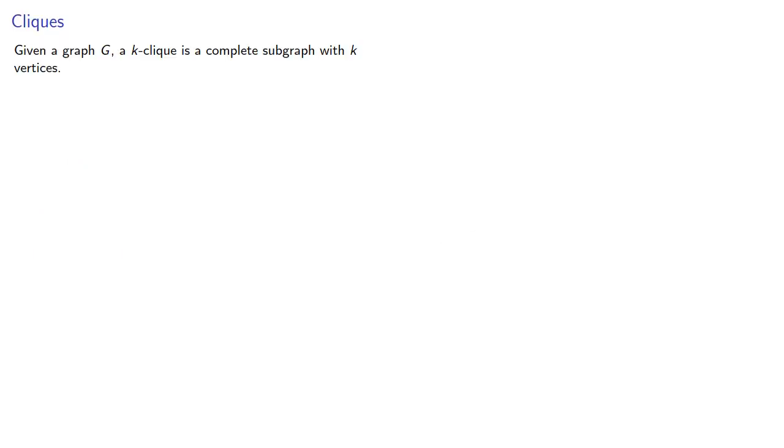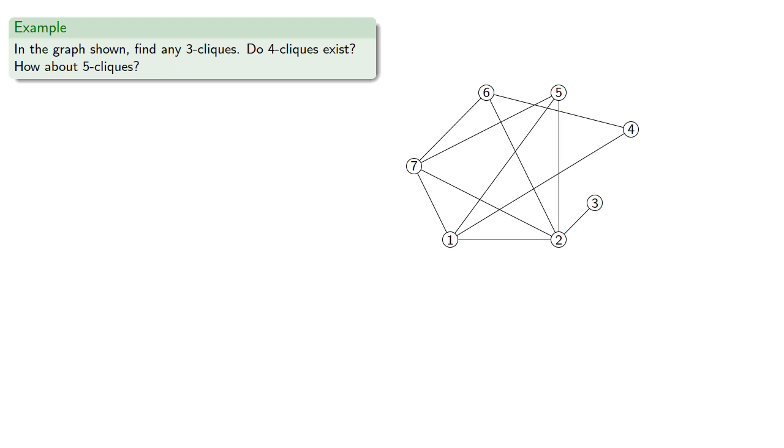Given the graph G, a k-clique is a complete subgraph with k vertices. For obvious reasons, a 3-clique is often called a triangle. For example, we might try to find any 3-cliques in the graph shown. Do 4-cliques exist? How about 5-cliques? A 3-clique would be 3 points, each connected with the others. We can find a few of them.